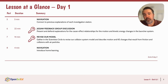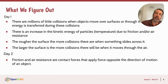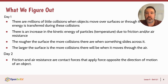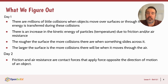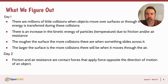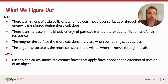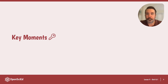Then we introduce some home learning. Here's what we figure out: there are millions of little collisions happening when objects move over surfaces or through the air, and energy is actually transferred out during those collisions. There is an increase in the kinetic energy of the particles of the track and the air. The rougher the surface, the more collisions there will be; the larger the surface, the more collisions when moving through air. Ultimately, friction and air resistance are contact forces that apply force opposite the direction of motion — they're really slowing things down.